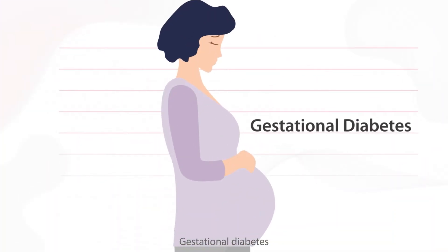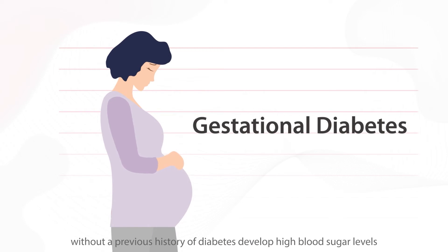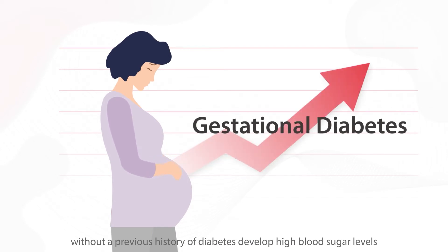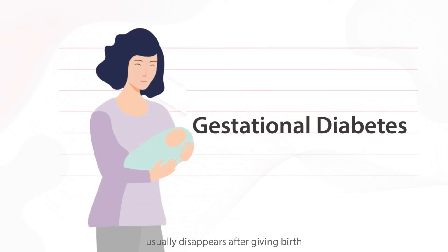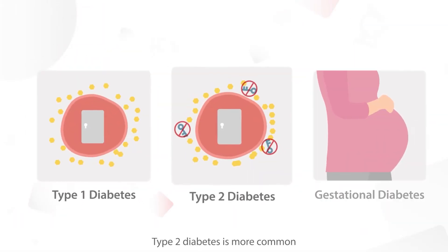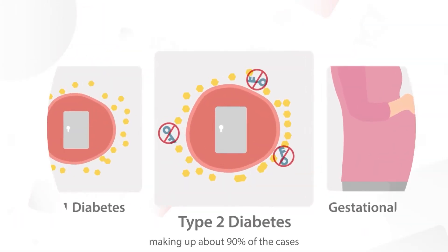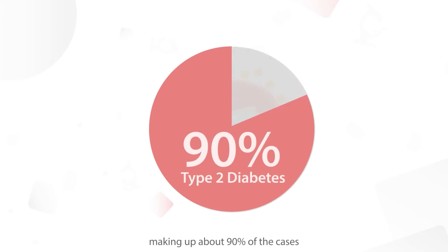Gestational diabetes occurs when pregnant women without a previous history of diabetes develop high blood sugar levels, and usually disappears after giving birth. Type 2 diabetes is more common, making up about 90% of the cases.